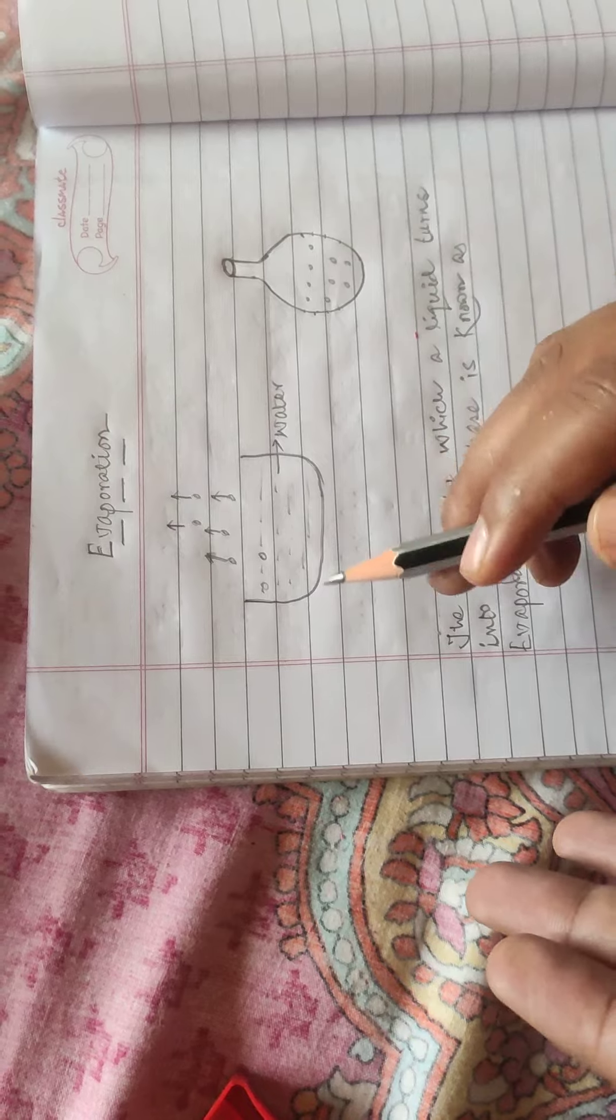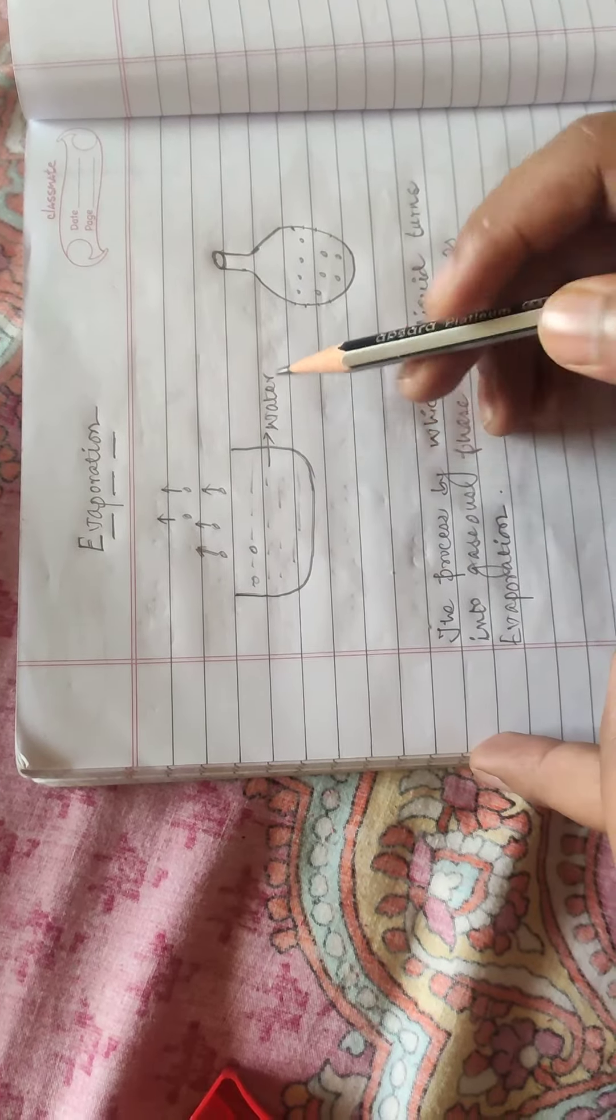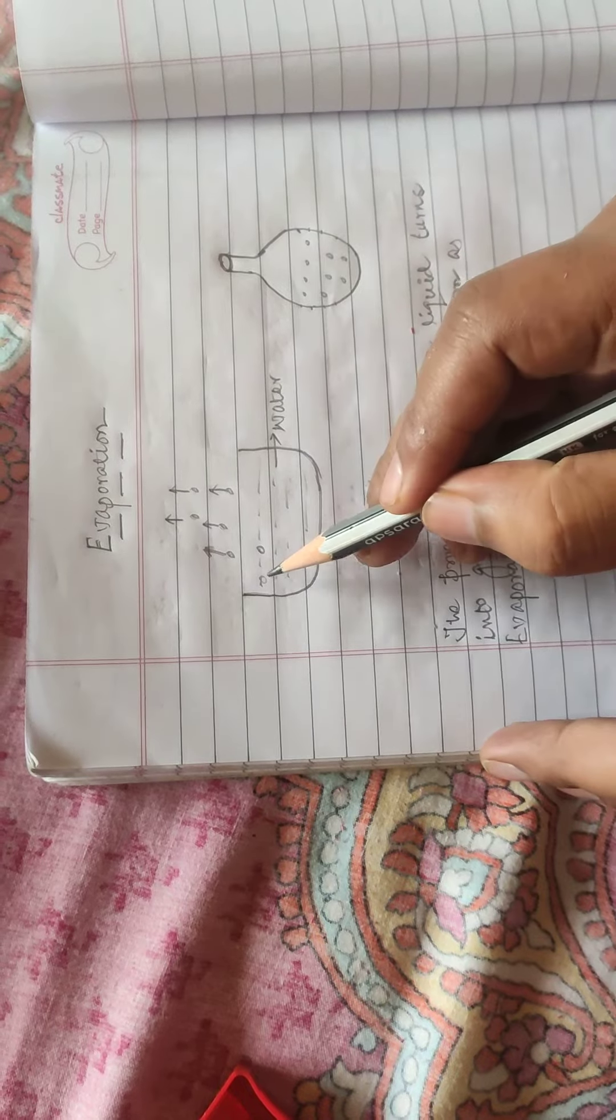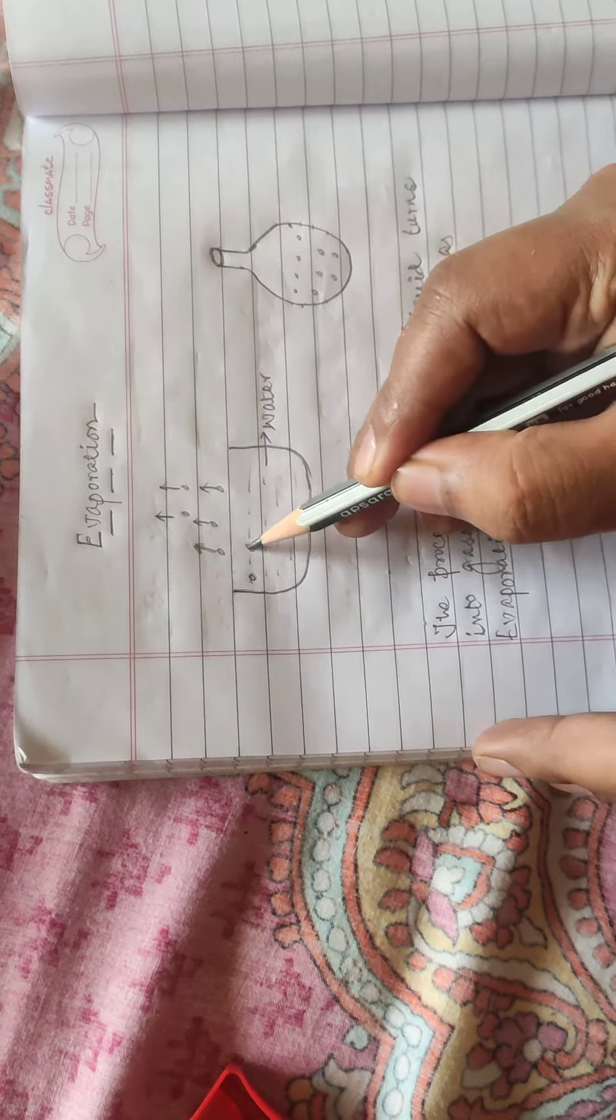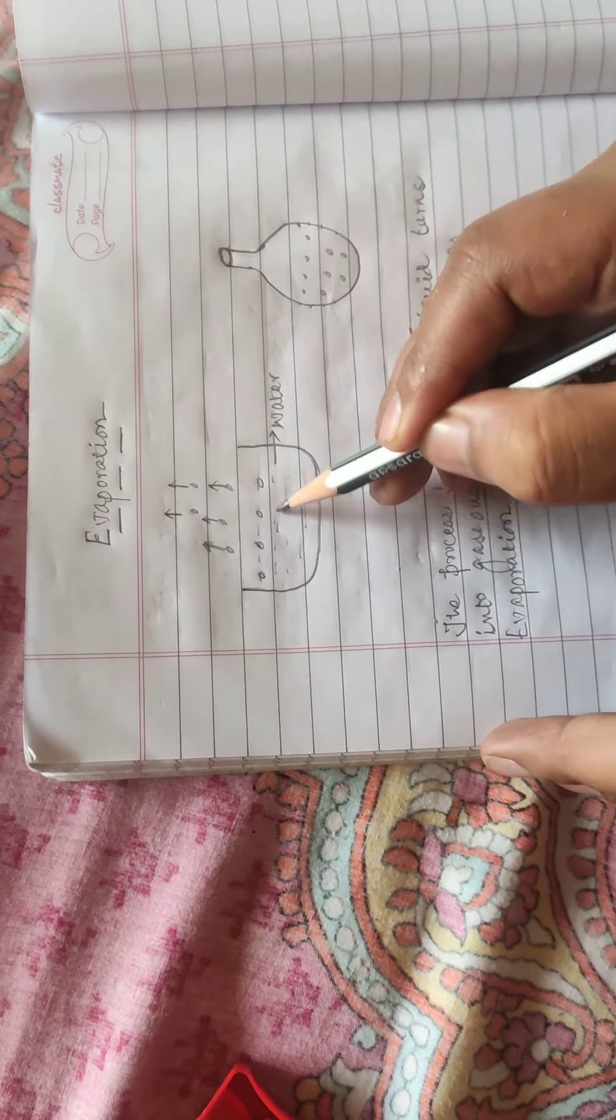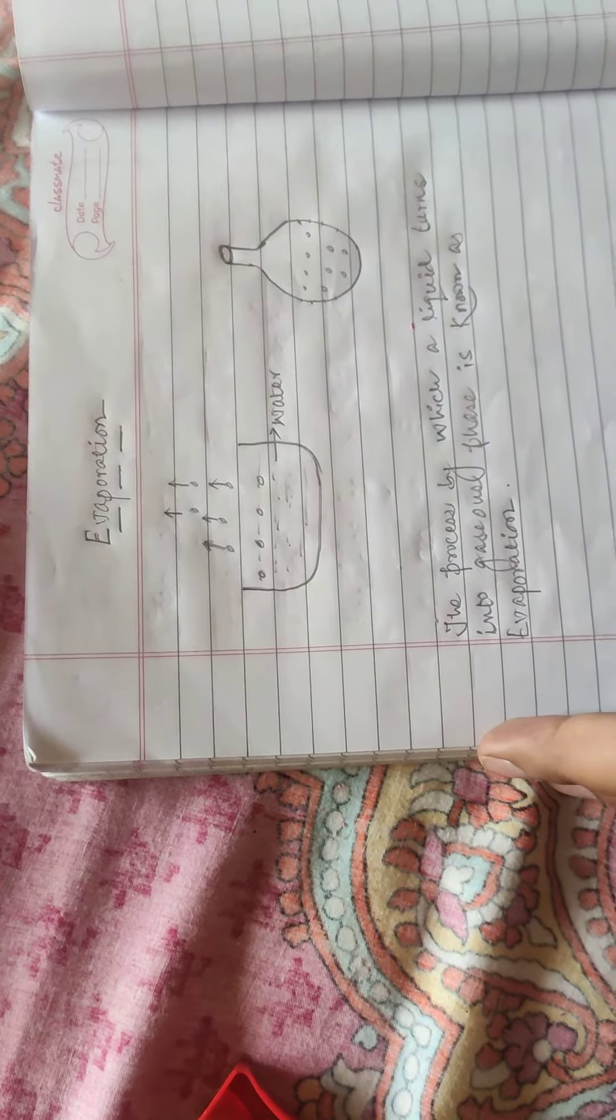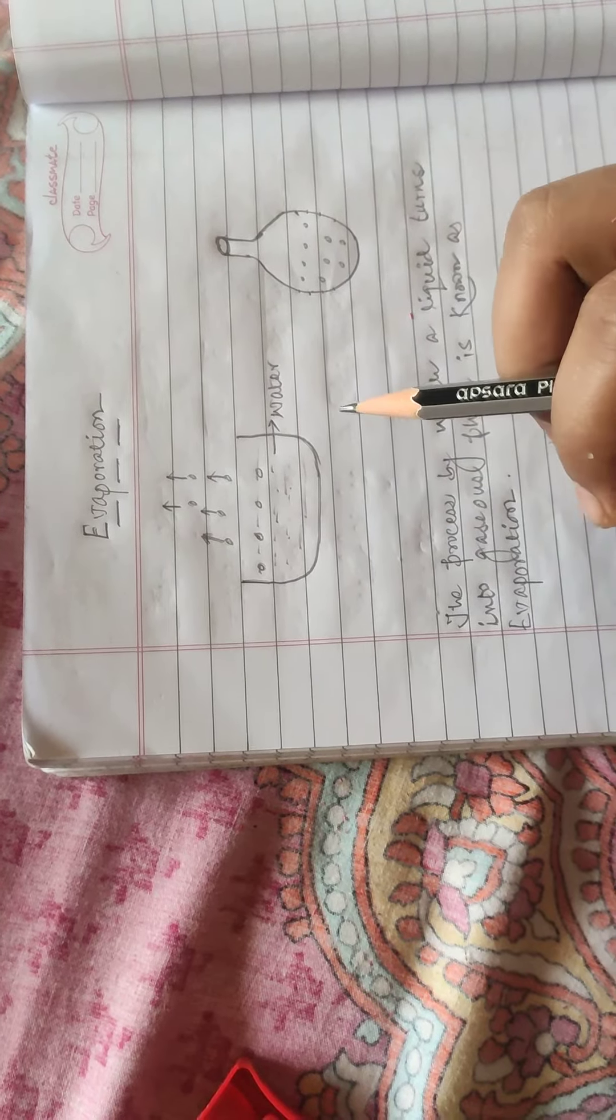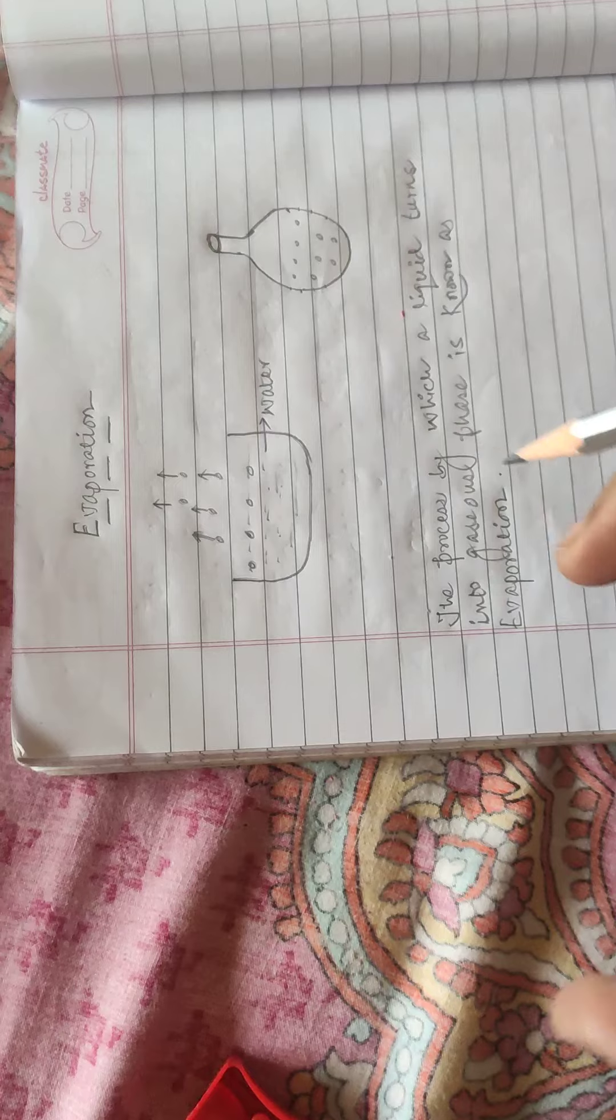Now let us look at an example. This is a bowl in which water is kept. The water molecules on the surface take heat from the inside water, and then change into gaseous phase. This is known as evaporation.